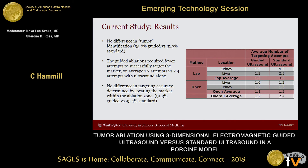There was no difference in tumor identification — finding the fiducial marker with ultrasound. The guided ablations required fewer attempts to successfully target the marker: with guidance, an average of 1.2 attempts, and with ultrasound alone, 2.4 attempts. Looking at the breakdown in the table, most of that difference was in the laparoscopic procedures. In open procedures, results were equivalent with and without guidance, but laparoscopically, it was 1.3 attempts with guided ultrasound versus 3.5 with standard ultrasound.